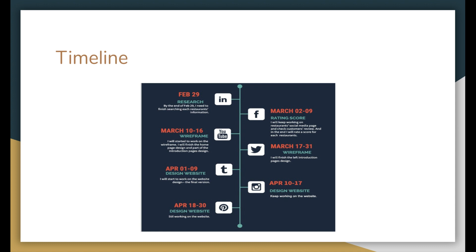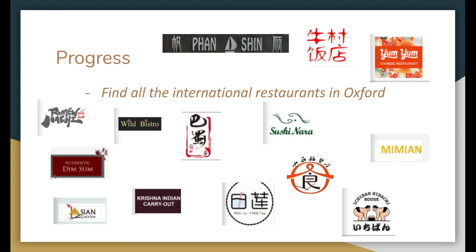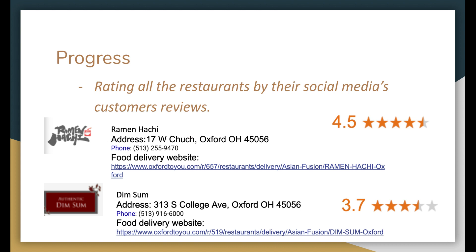For progress so far, I will highlight three points. The first is finding all the international restaurants in Oxford — I have done all the searching and they are all listed on this page. The next is rating all the restaurants by their social media customer reviews, and this page shows the rating scores I have given to each restaurant.